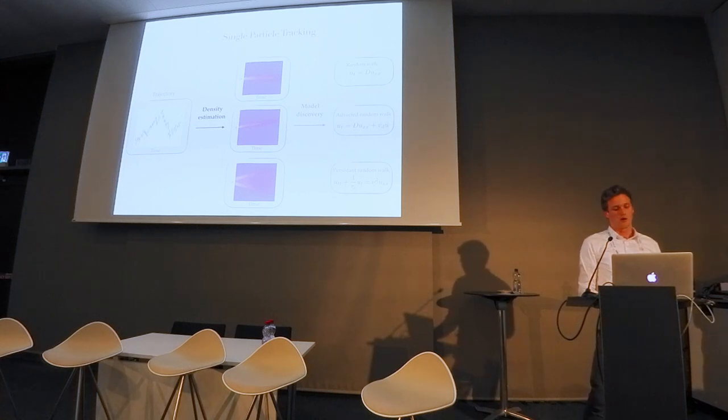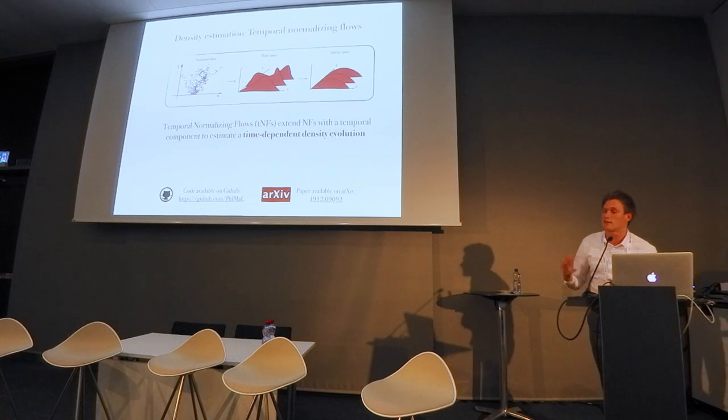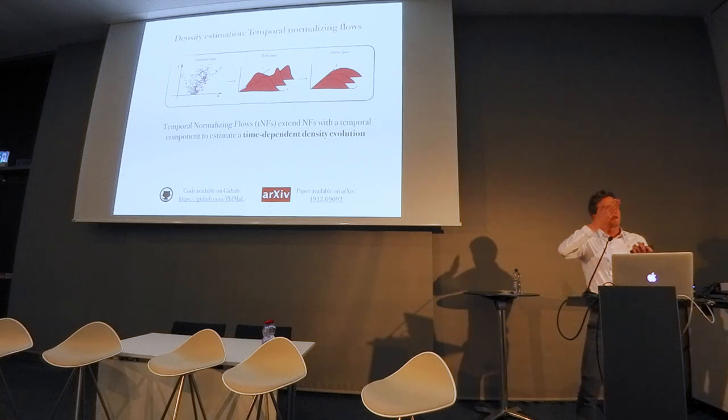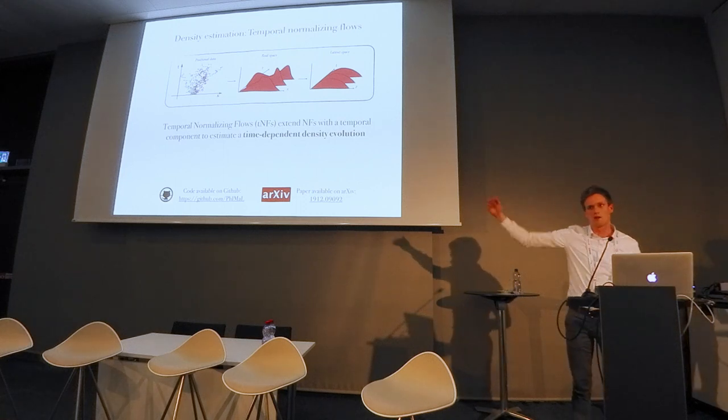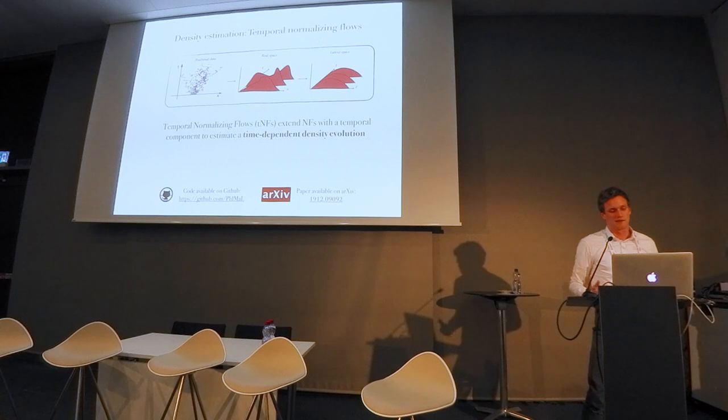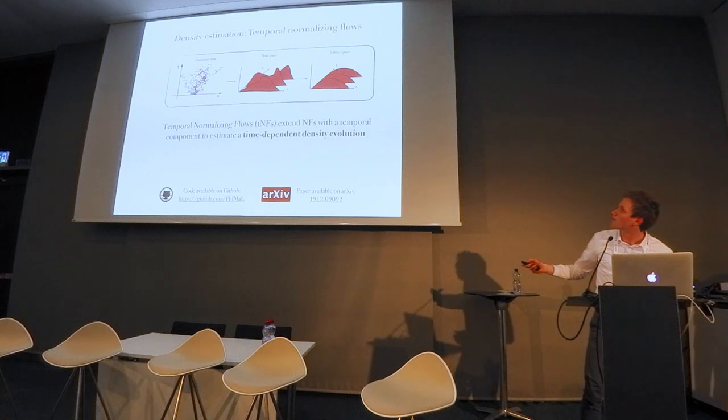What we did was use a concept which has been discussed today, which is normalizing flows. We've extended these normalizing flows to include the temporal axis. We use a neural network to link the different frames, the different density estimations through time, and with this we could get a time-dependent density evolution. I don't have time to discuss this in more detail, but we put the paper of these temporal neural flows on arXiv recently.